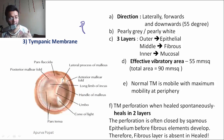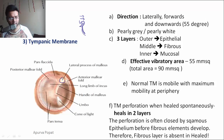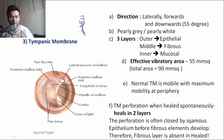The lateral process of the malleus becomes more prominent when the tympanic membrane is retracted. If the tympanic membrane is pulled inwards, this lateral process becomes more prominent, which guides us that the tympanic membrane is retracted.